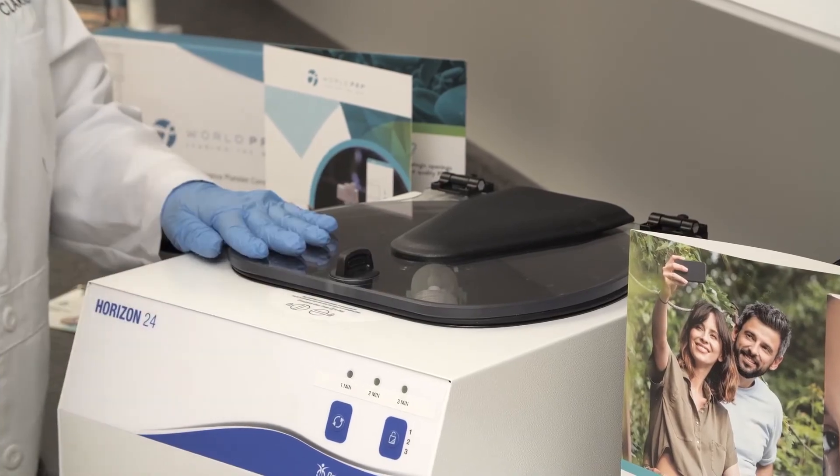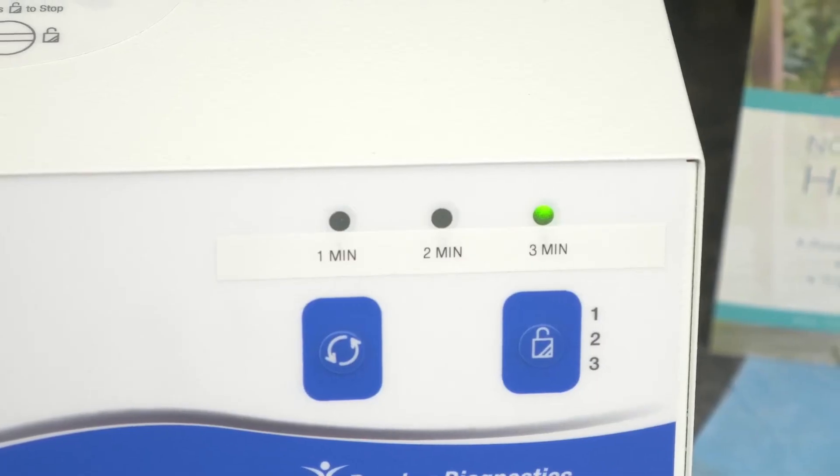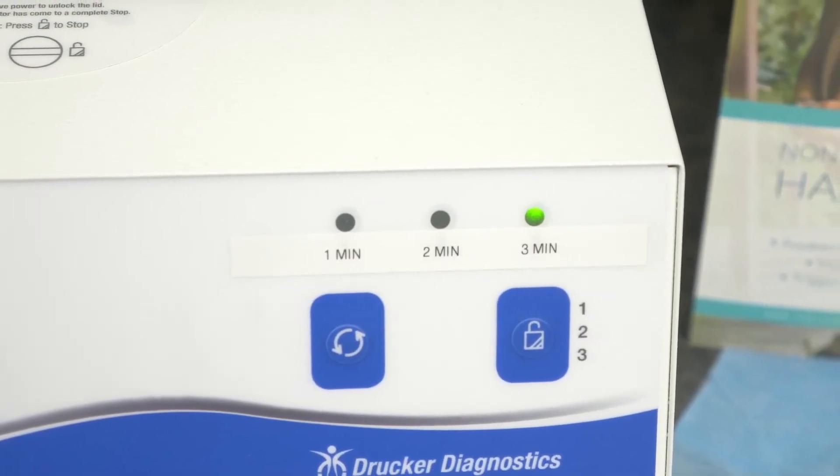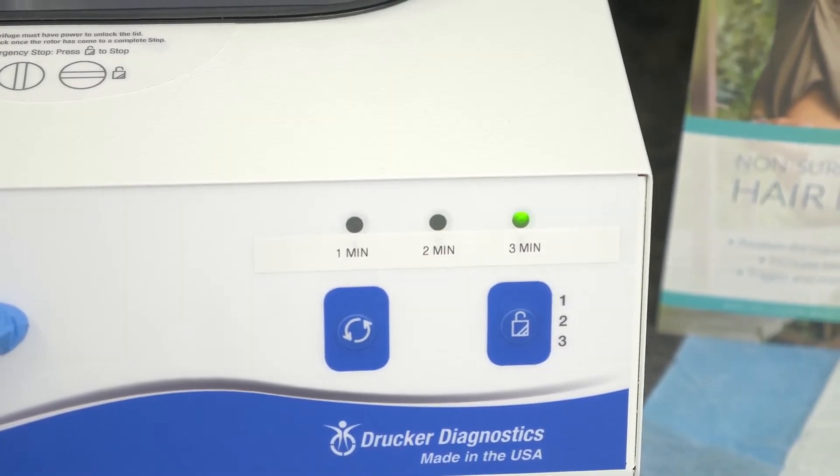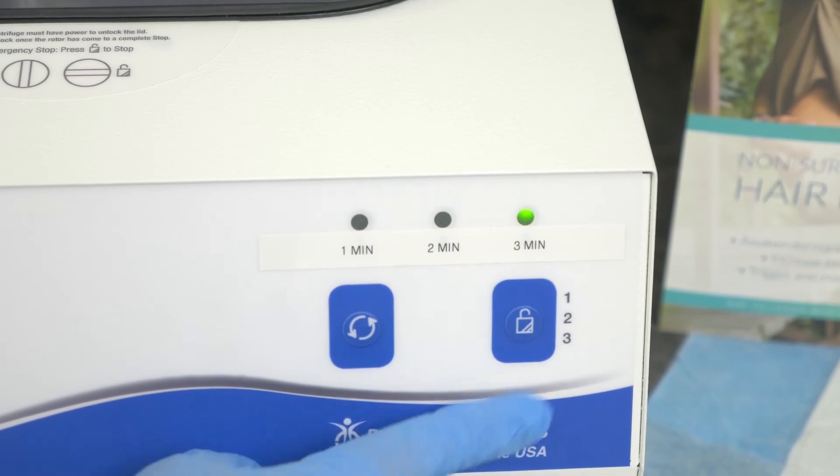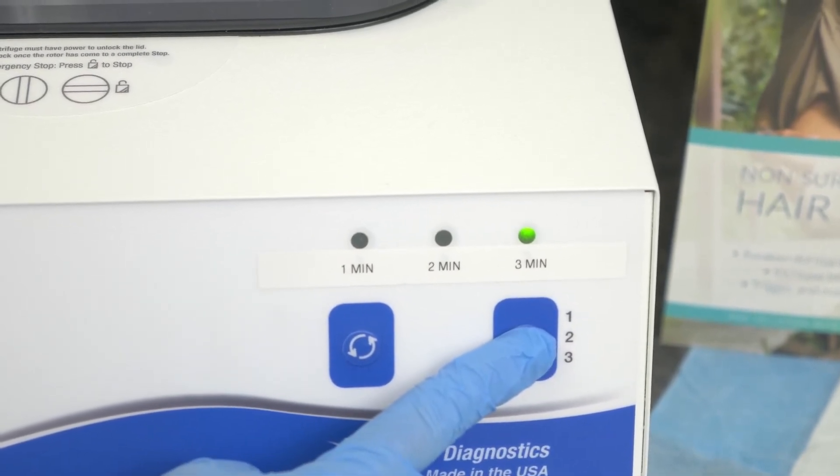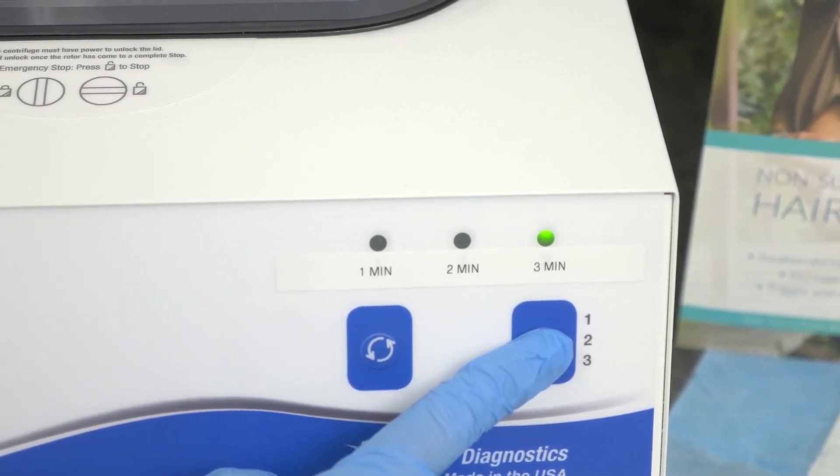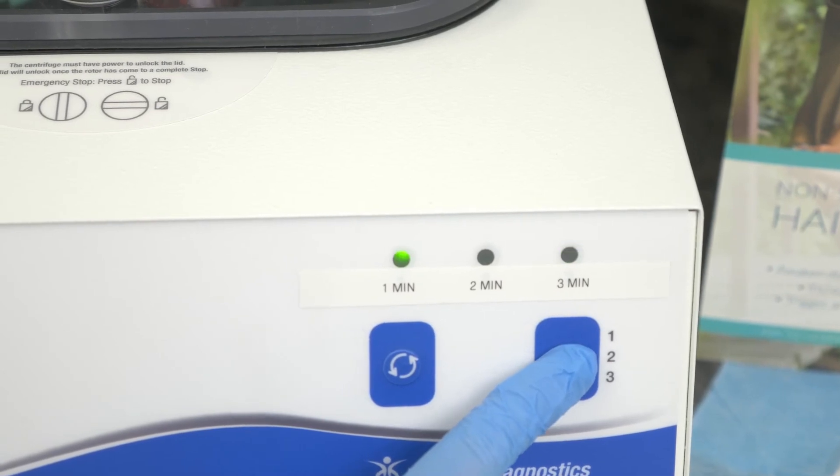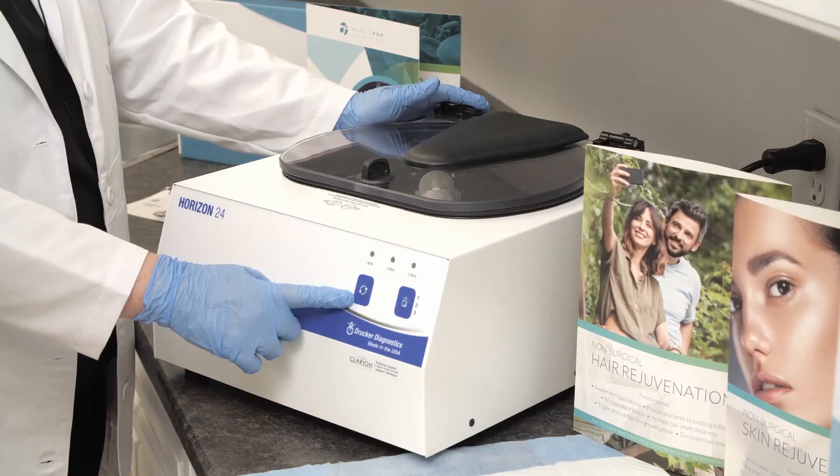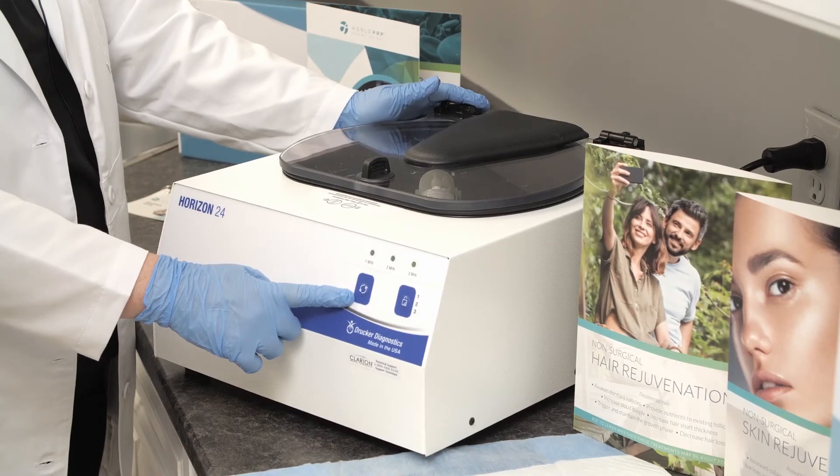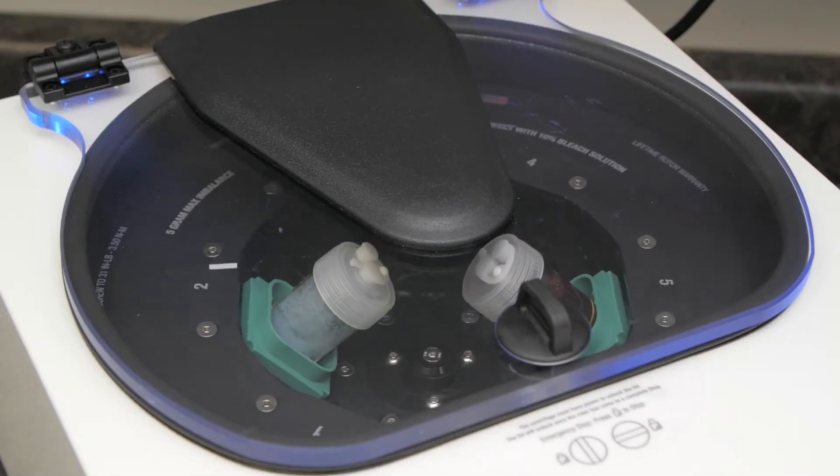On the front of the centrifuge there are 1, 2 and 3 minute spin time options. Select the 3 minute option. This is located above the lock button on the front of the centrifuge. To select this option press the lock button once to lock the centrifuge. Then again until you see the 3 minute option selected. This will be indicated by a green light. Now press the start button on the left hand side and this will begin the spin cycle.